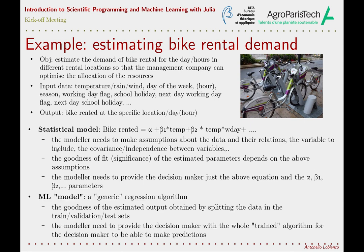Let's see now how the same objective can be obtained with a machine learning model. As said, there is no real model here — there is no need for any expert knowledge about the subject. We choose a generic regression algorithm that works with our kind of data, we train it with the data of the bike company, and that's all. We assess the goodness of the algorithm by randomly splitting the data into different sets — one used for the actual training of the model and one for testing it. We'll see during the course why in the slides here there are three sets instead of two.